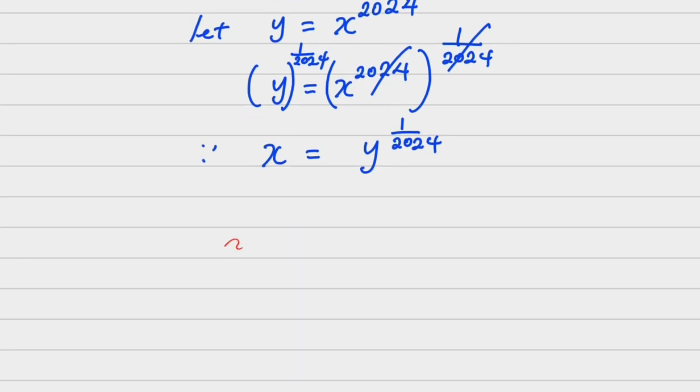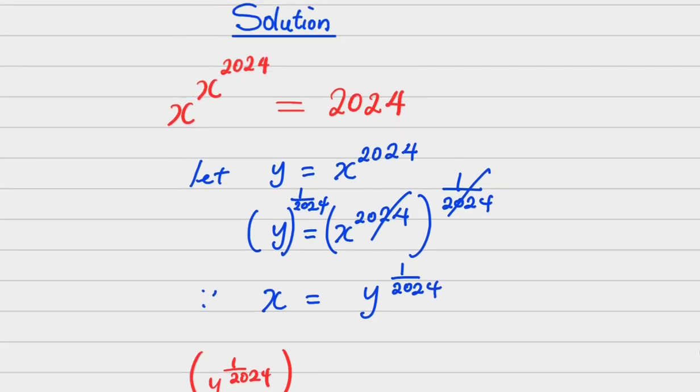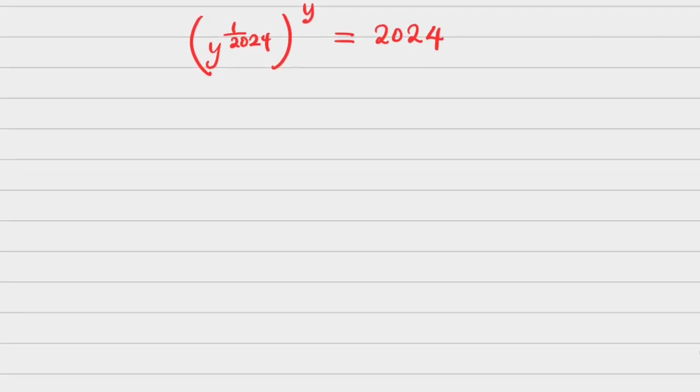Remember, x is now y^(1/2024), raised to power 2024, which is then raised to power y, and everything equals 2024. I hope you've understood what I've done. Let's continue.